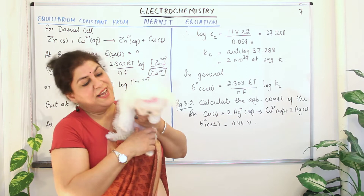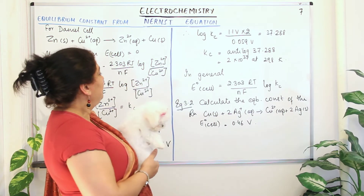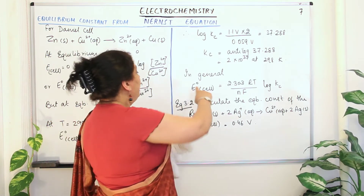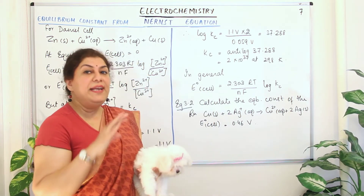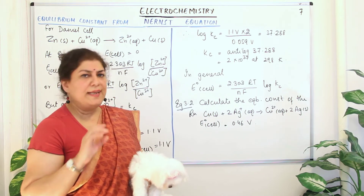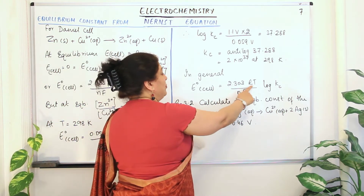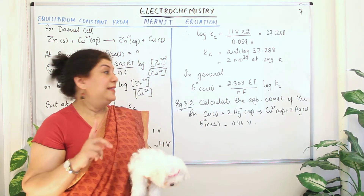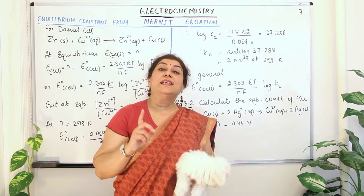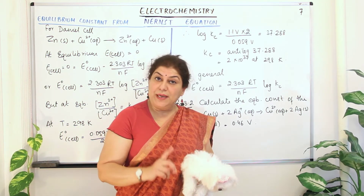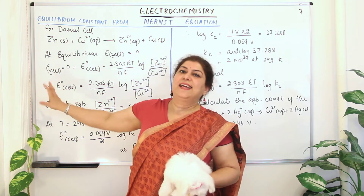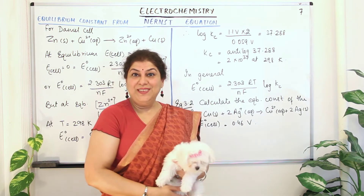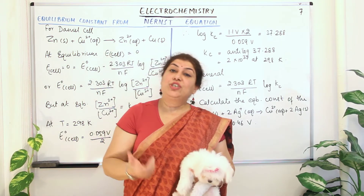The general equation for any cell would be: E°_cell = (2.303RT / nF) × log Kc. The condition is that the reaction must be at equilibrium, meaning E_cell must equal zero. Only then is this equation applicable.